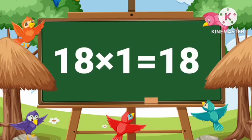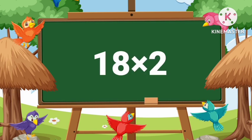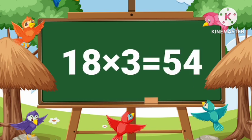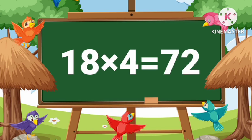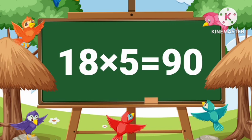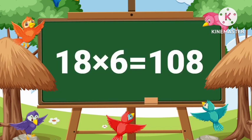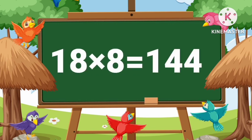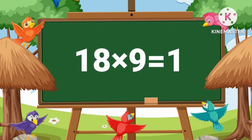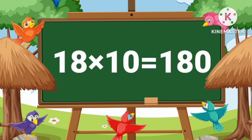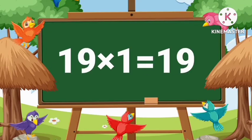Eighteen ones are eighteen. Eighteen twos are thirty-six. Eighteen threes are fifty-four. Eighteen fours are seventy-two. Eighteen fives are ninety. Eighteen sixes are one hundred eight. Eighteen sevens are one hundred twenty-six. Eighteen eights are one hundred forty-four. Eighteen nines are one hundred sixty-two. Eighteen tens are one hundred eighty.